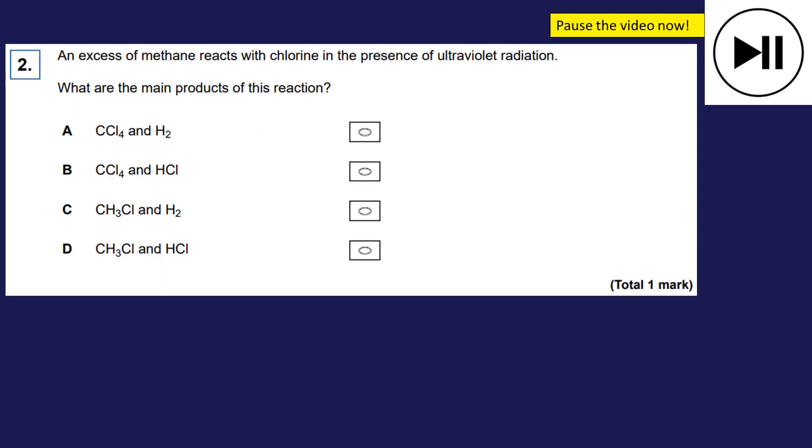Next up, again, pause the video. And when you're ready to hear the answer, unpause the video. An excess of methane. So we've got mostly methane here with chlorine in the presence of UV light. So which would be our major product? Well, again, I'm going to ignore A because hydrogen is not made. I'm ignoring C because hydrogen is not made. So I've managed to narrow this down to B and D.